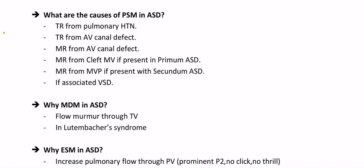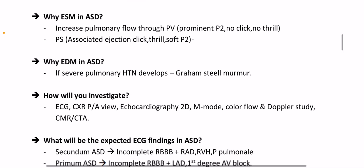MR from cleft mitral valve if present in primum ASD; MR with MVP if present with secundum ASD; if associated ventricular septal defect is present. Why MDM in ASD? Flow murmur through the tricuspid valve; in Lutembacher syndrome. Why ejection systolic murmur in ASD? Increased pulmonary flow through the pulmonary valve causes prominent P2; no click, no thrill. In associated pulmonary stenosis: ejection click, thrill, and soft P2. Why early diastolic murmur in ASD? If severe pulmonary hypertension develops, Graham Steell murmur.